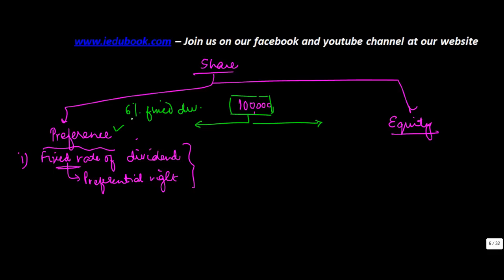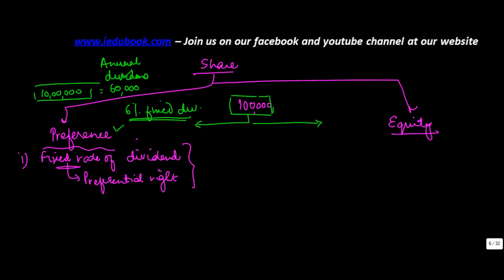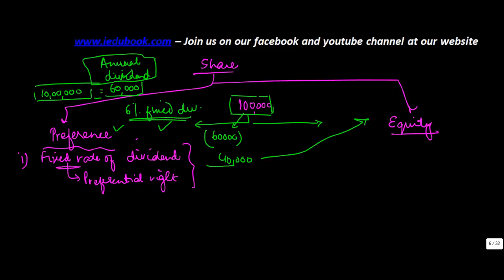When this 100,000 has to be divided, depending on the terms of the preference shares, let's say the preference share carries a 6% fixed dividend. If the preference shares are worth rupees 10 lakh, then 6% on 10 lakh becomes 60,000. So they get an annual fixed dividend of 60,000. This 100,000 is not divided equally — first 60,000 goes to preference shareholders.